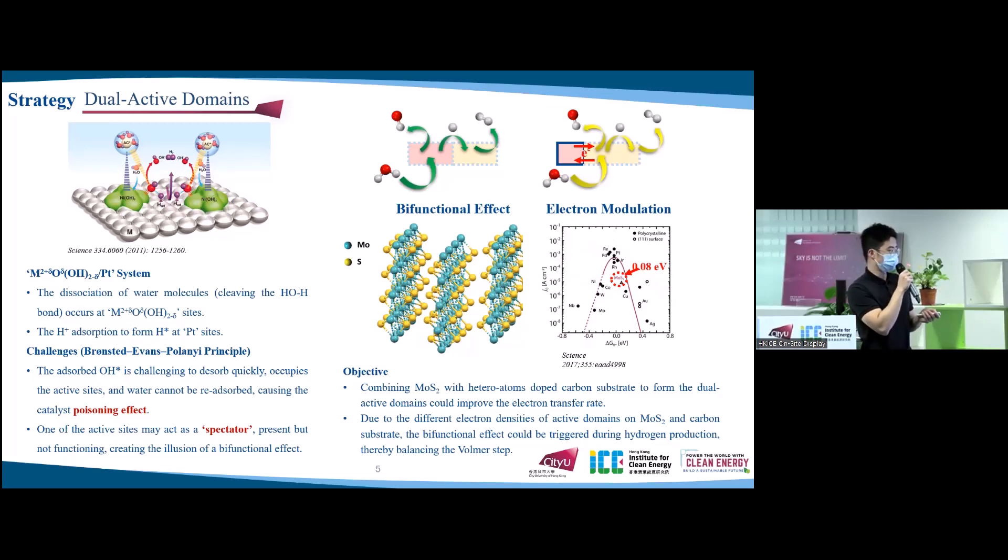But its unsatisfactory electronic conductivity and the catalytic inertness of basal plane limit its performance enhancement. Therefore, we combine molybdenum disulfide with heteroatom-doped carbon substrate to form the dual-active domains, which could improve the electron transfer rate. Due to the different electron densities of active domains, molybdenum disulfide and carbon substrate, the bifunctional effect could be triggered during hydrogen production, thereby balancing the Volmer step.